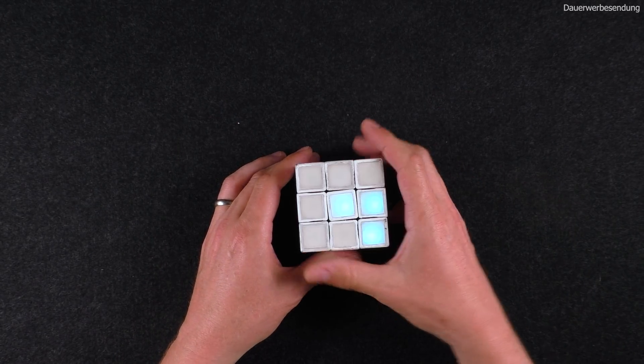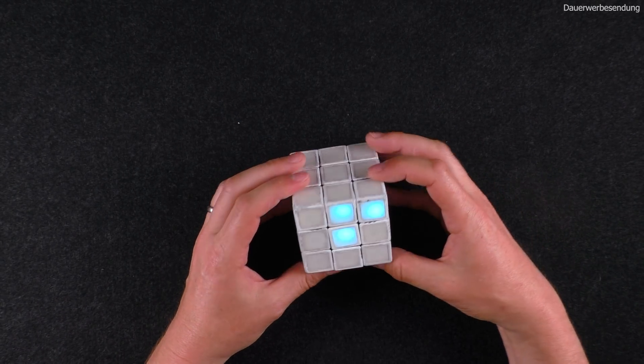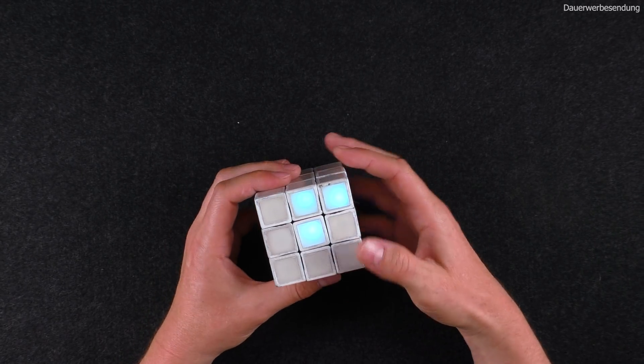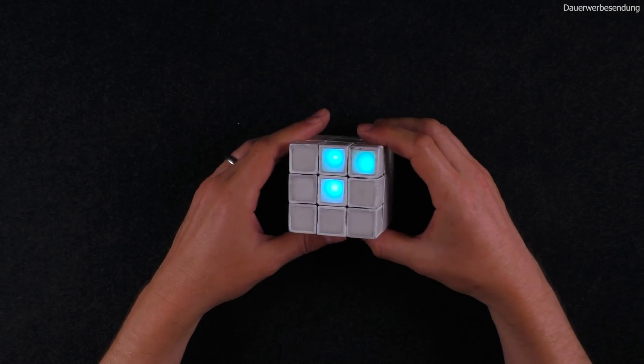To turn this cube on we will just twist one face and we can see that some of the tiles will light up in this case in the blue color. Now it should be better visible.